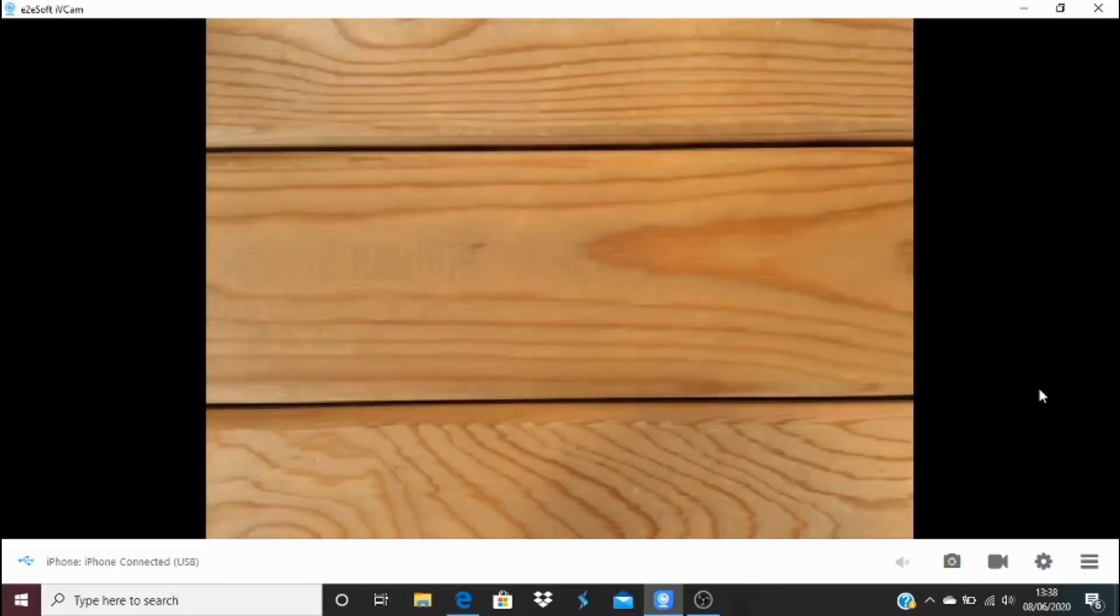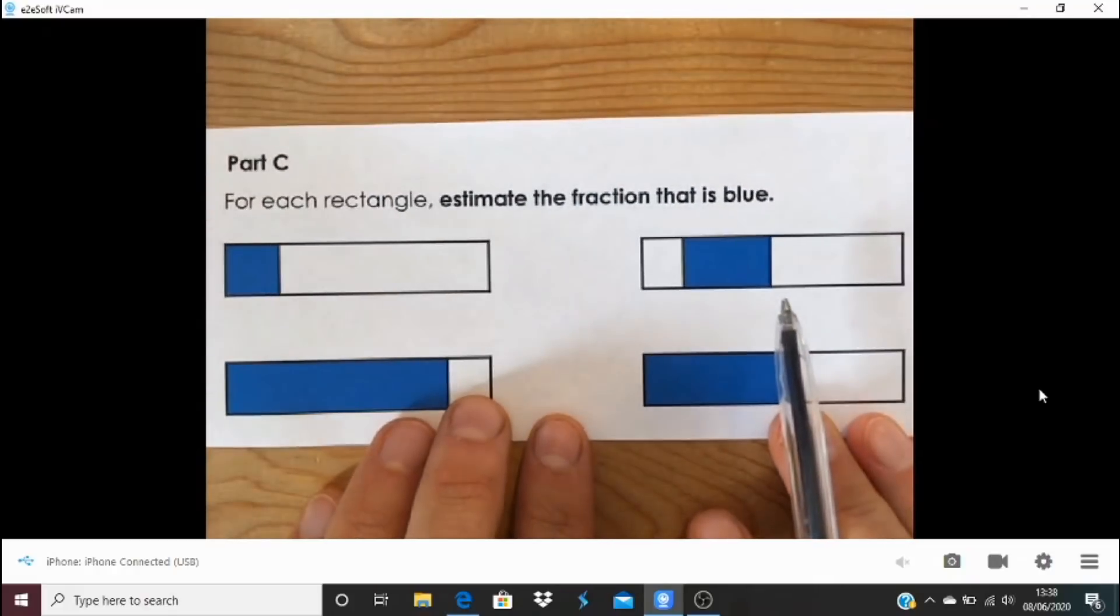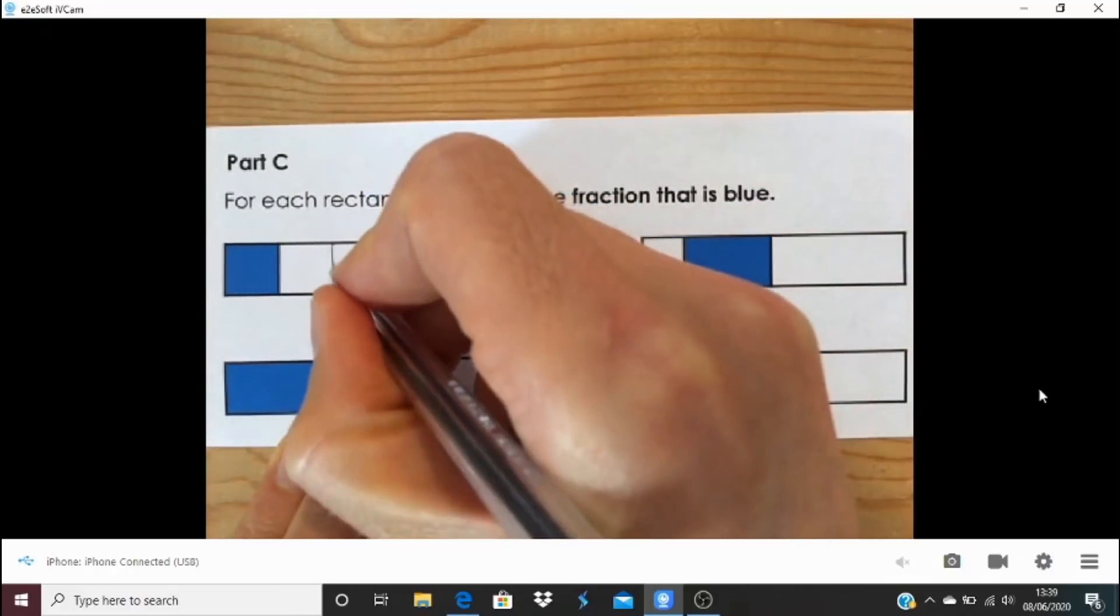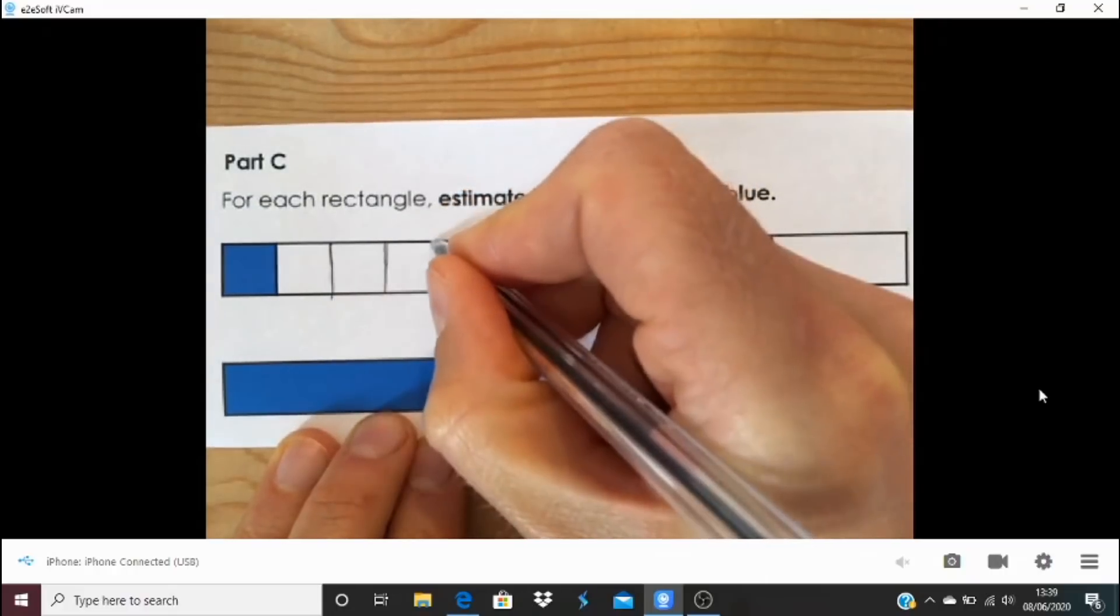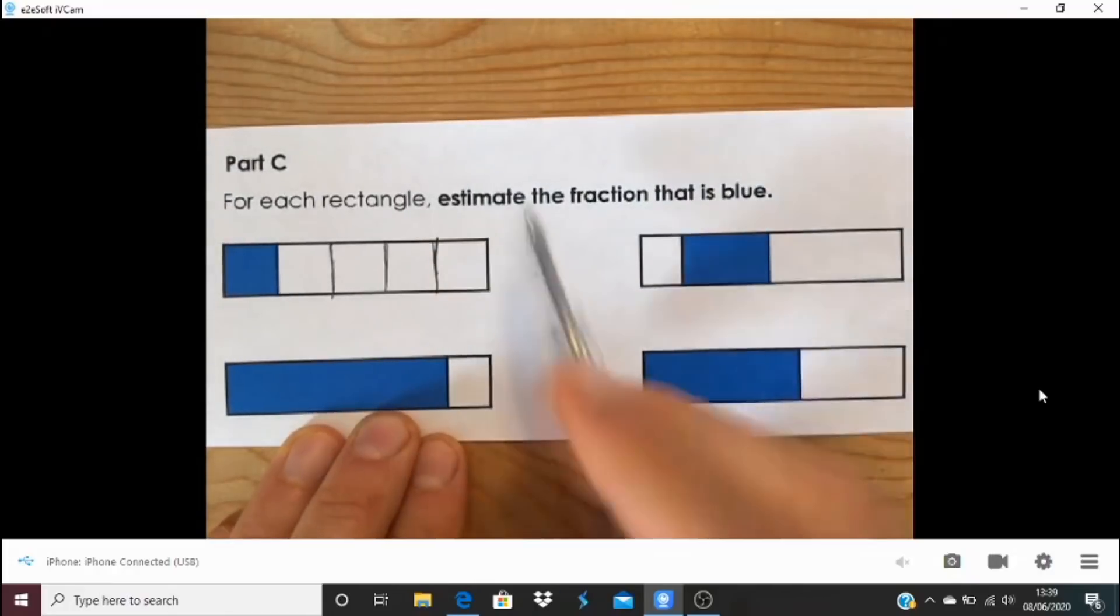If I put another line in about there, that should split the shape approximately into equal parts. I think that one is slightly smaller than that one actually with my line, but helping to show that this looks like it's approximately a quarter. And so making this one the larger part because of its comparison to the whole. The last one I wanted to look at was this one, quite a complex one. For each rectangle, estimate the fraction that is blue. I've got to think about how many of this part would fit inside of the whole. I'm going to split this into approximately equal parts.